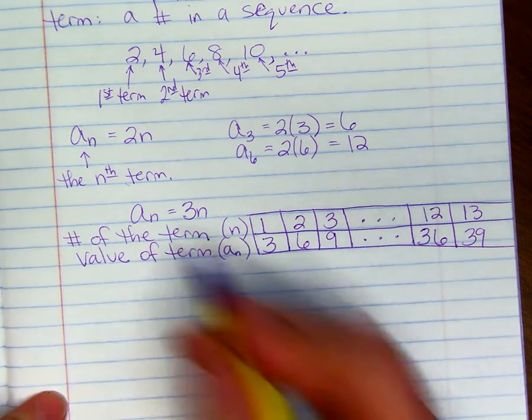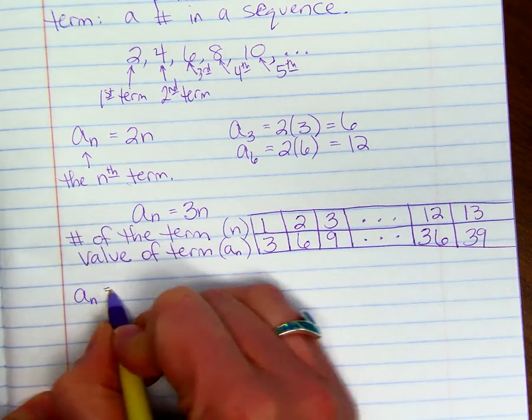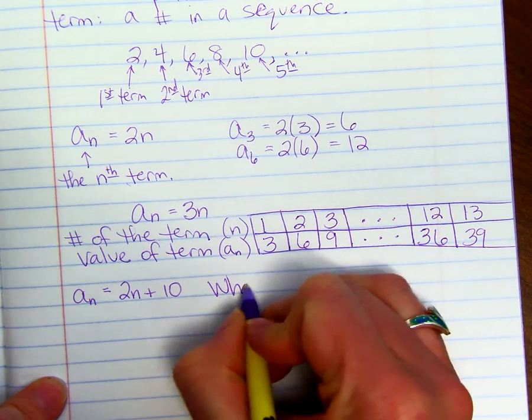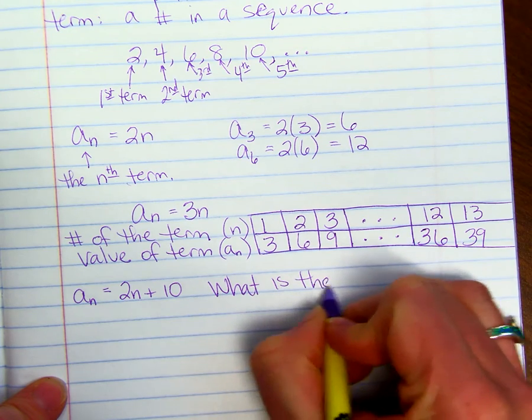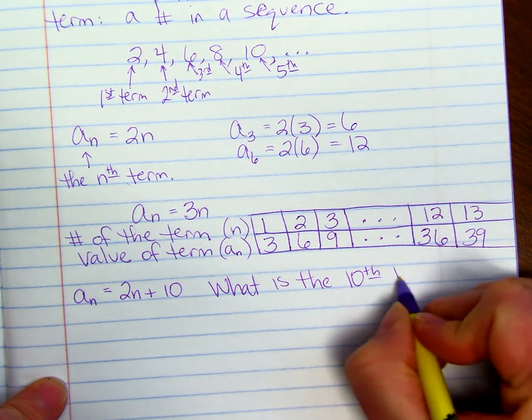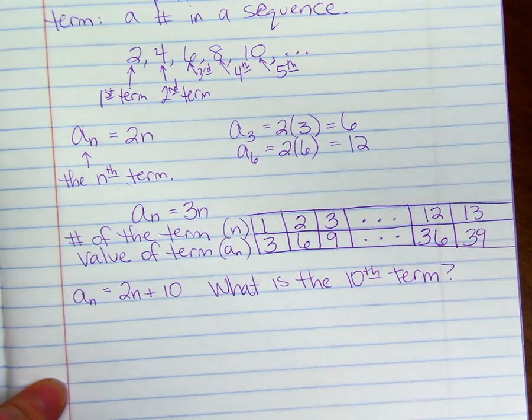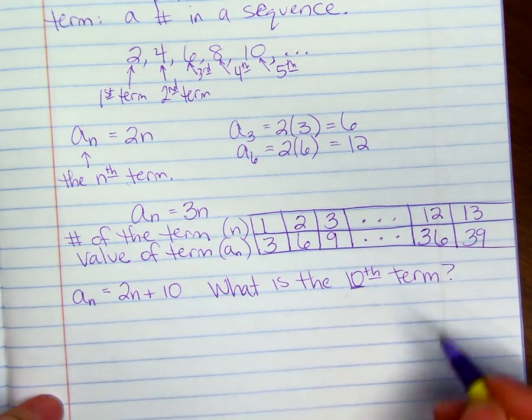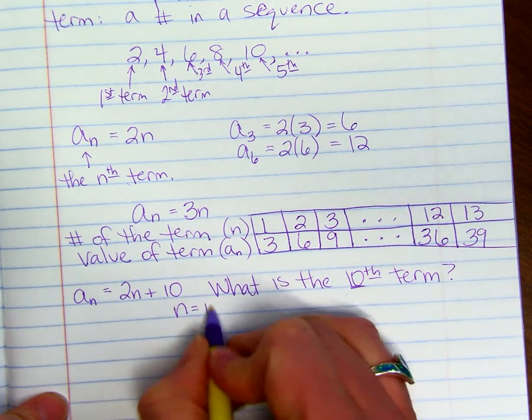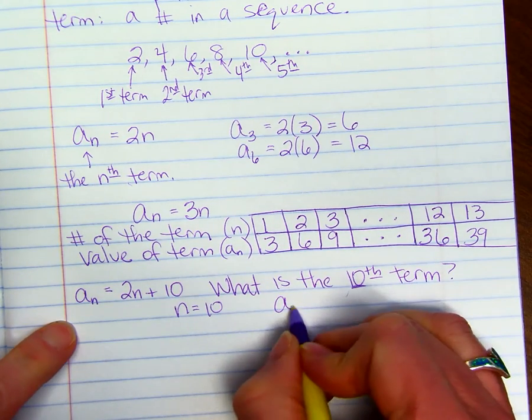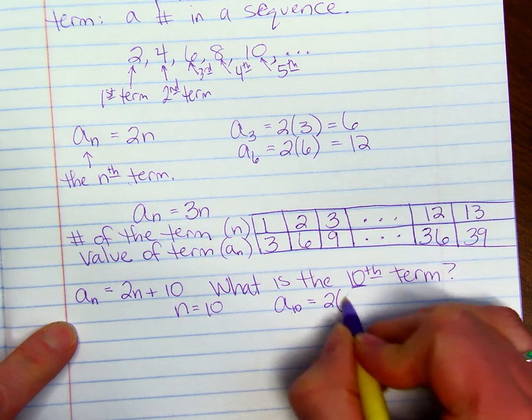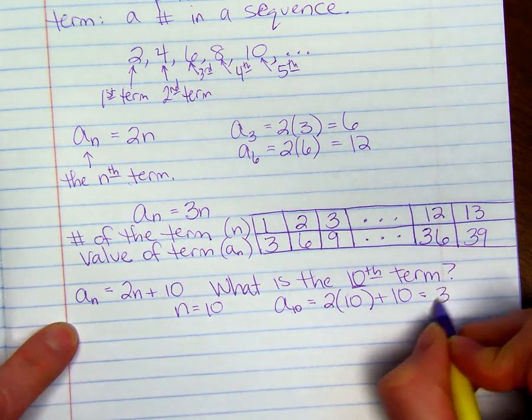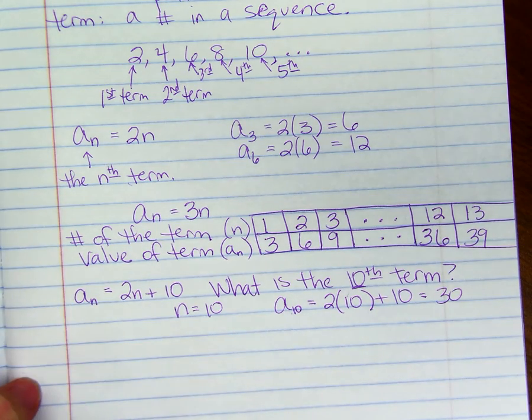Here's another example. If a sub n equals 2n plus 10, what is the 10th term? We just want to plug in 10 for n. The 10th term, a sub 10, is going to be 2 times 10 plus 10, which is going to be 30.